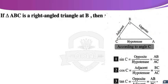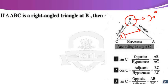If triangle ABC is a right-angled triangle at B, where measure of angle B equals 90 degrees, find sine C, cosine C, and tan C. Where is angle C? Angle C is here. The side called opposite, the side called hypotenuse — the line segment opposite the right angle — and this side called adjacent. Adjacent of angle C, opposite of angle C, and the hypotenuse.